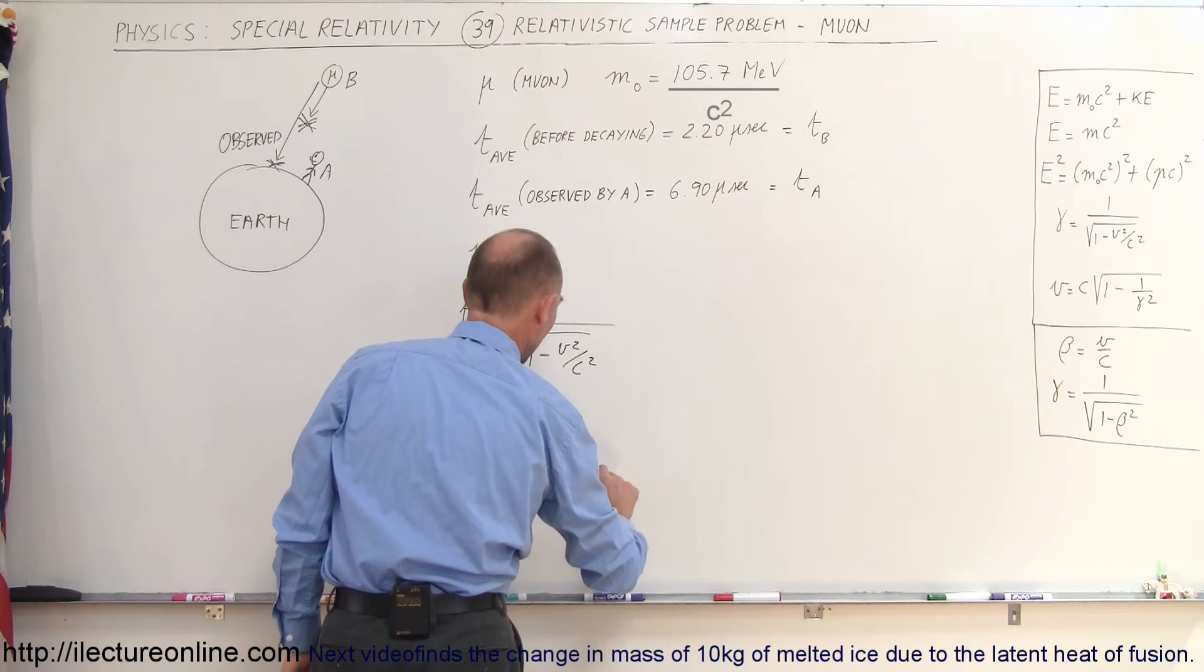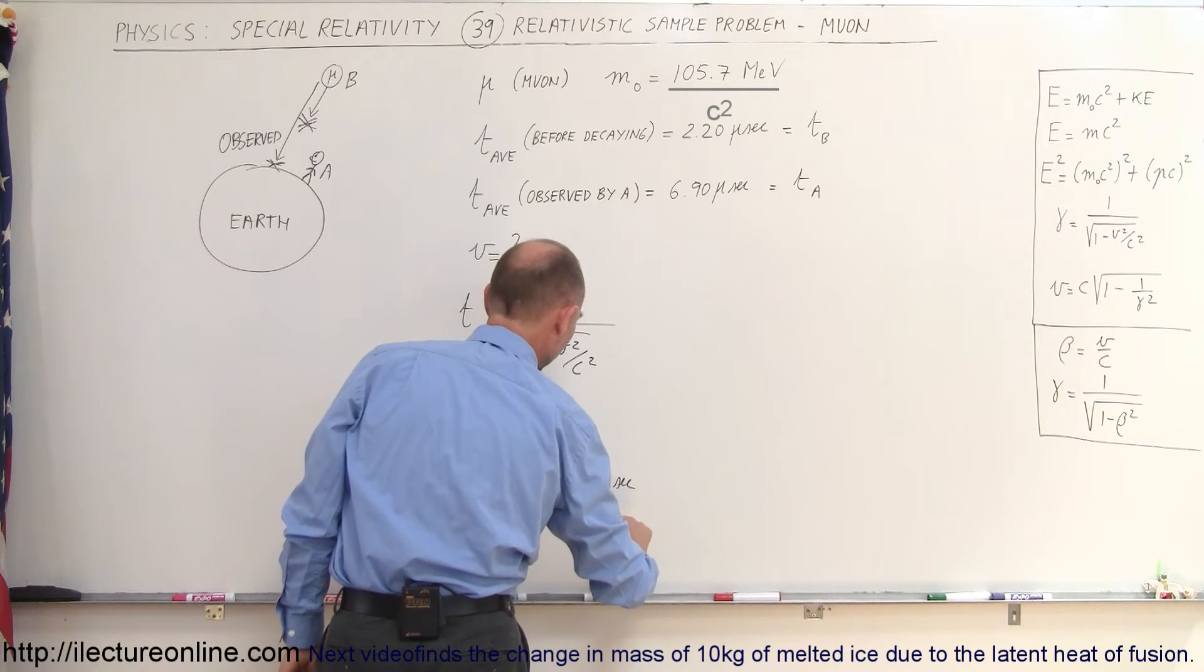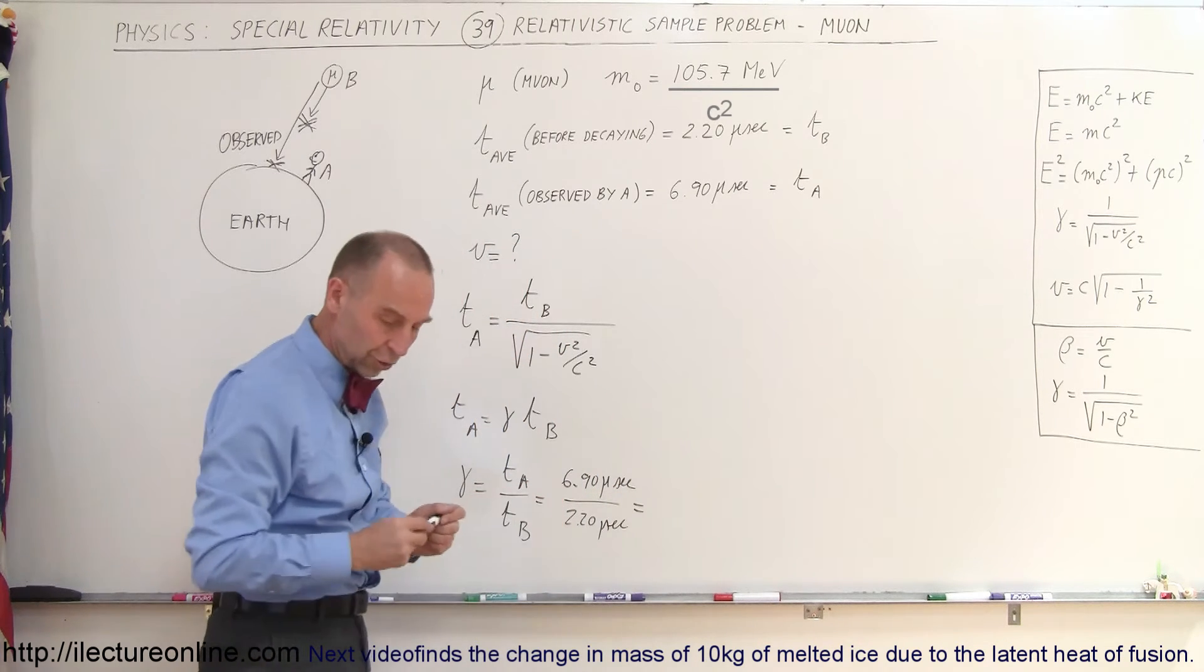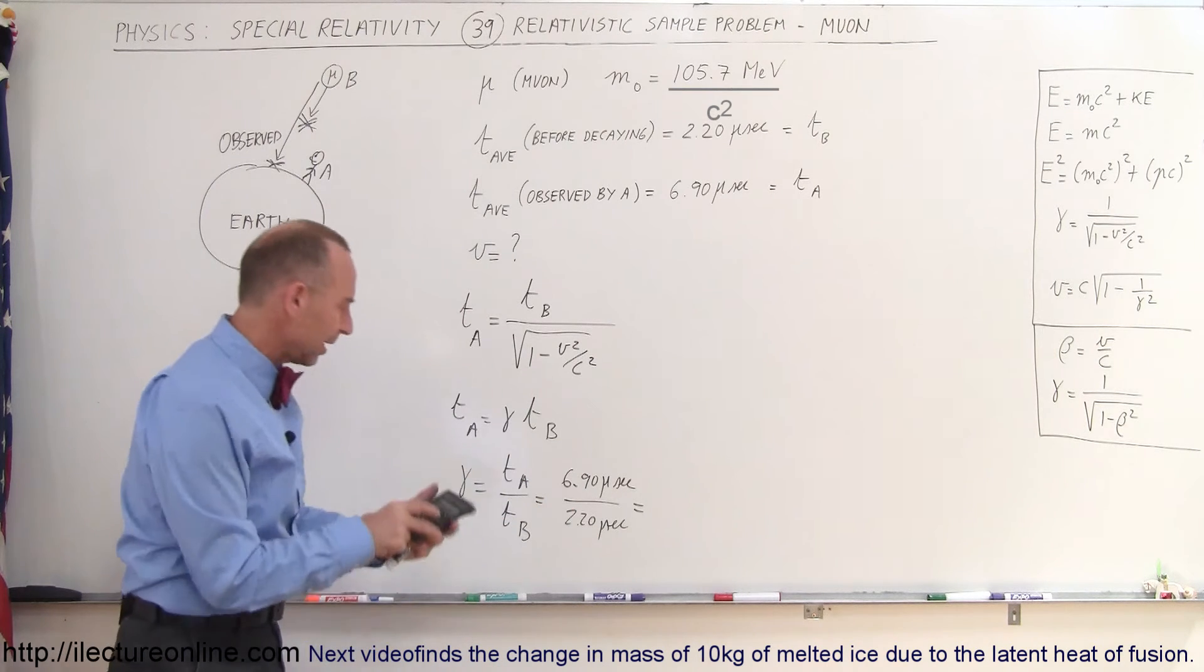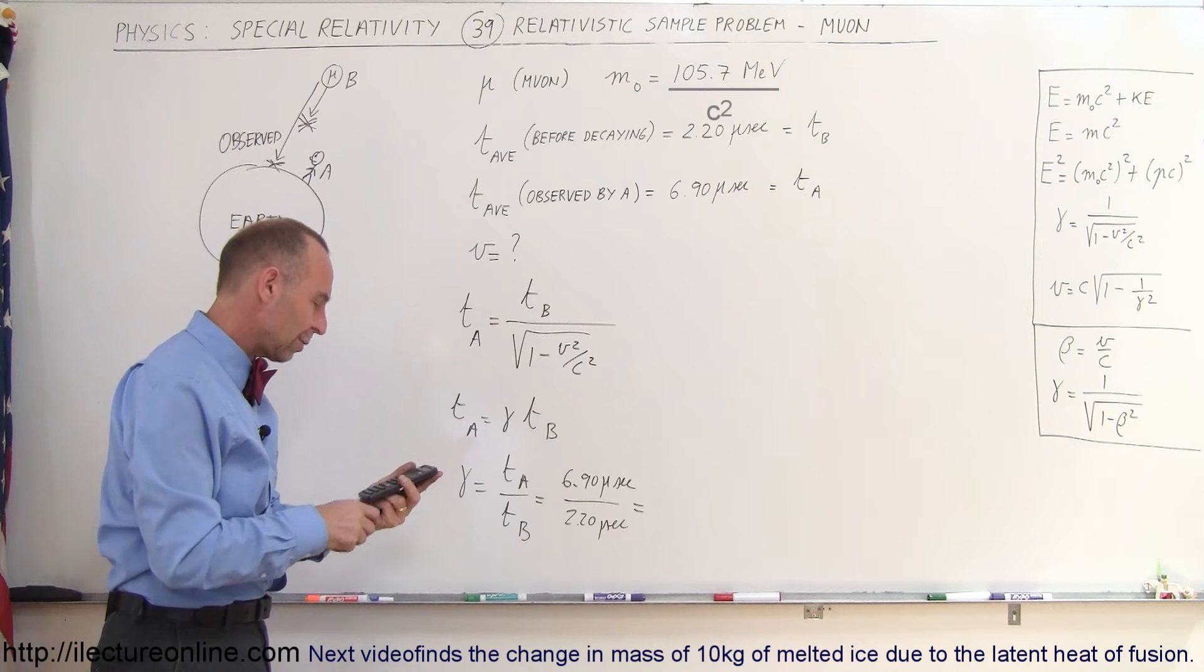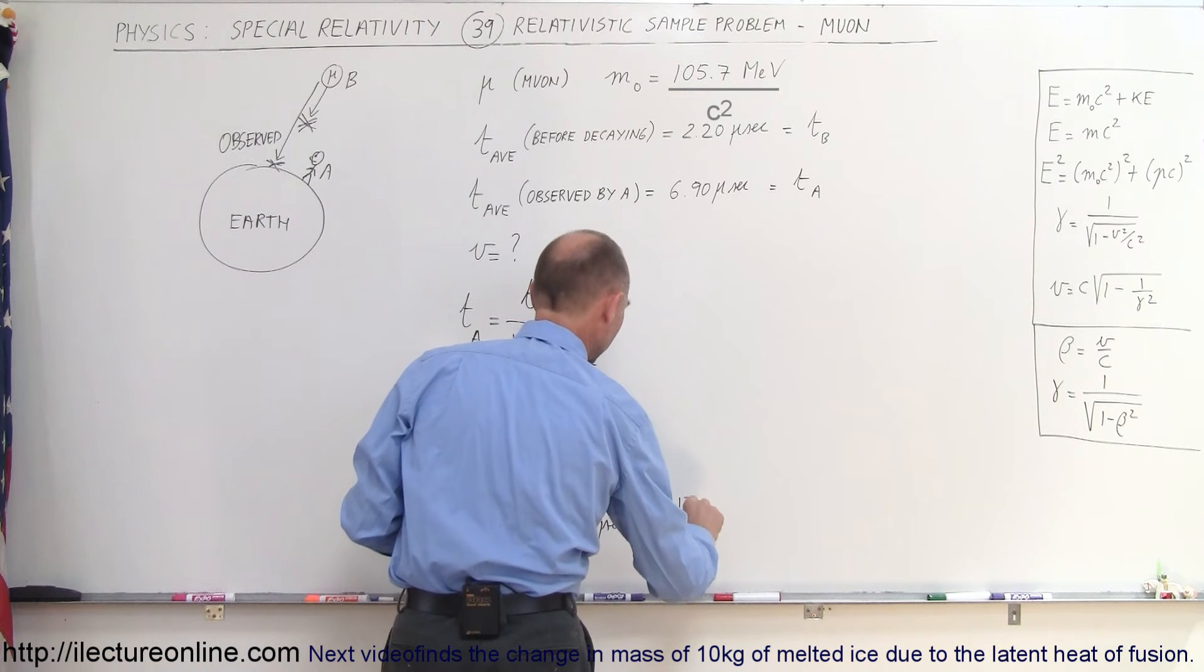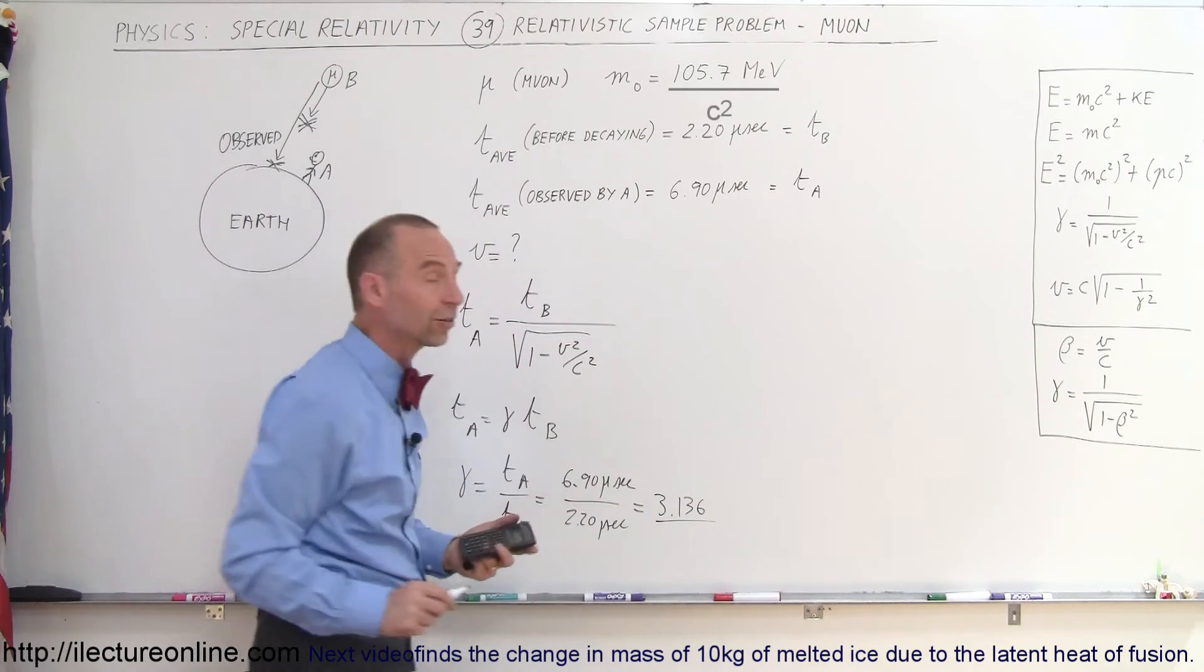That would be 6.90 microseconds divided by 2.20 microseconds, which is equal to a ratio of, let's grab a calculator, so 6.9 divided by 2.2, and we get 3.136. So, this is 3.136, which is the Lorentz factor.